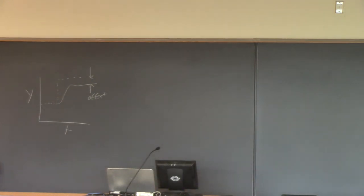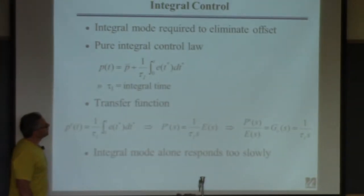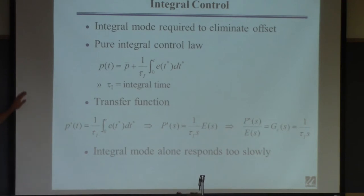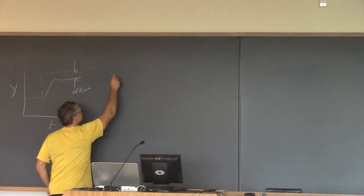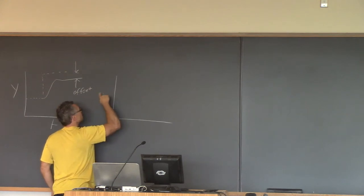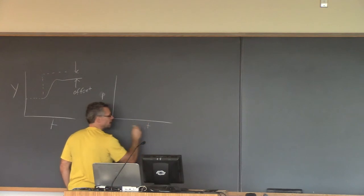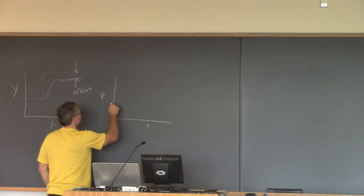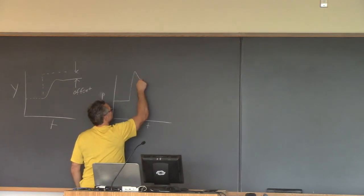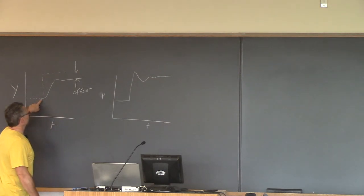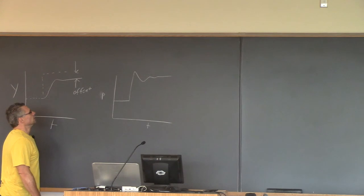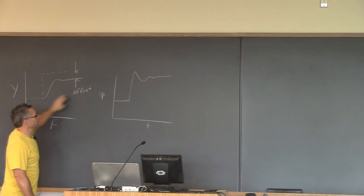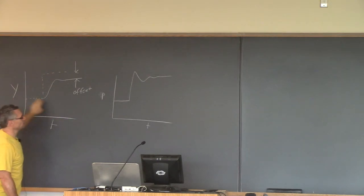Proportional control alone is usually not good enough, so we decided we should add integral control. The nice thing about proportional control is the controller acts quickly. If you change the desired output value, the controller generates a signal that tries to drive the output to the new set point. You can think of control as moving variability from Y over to P — because Y is what you consider important, and P is something you don't.